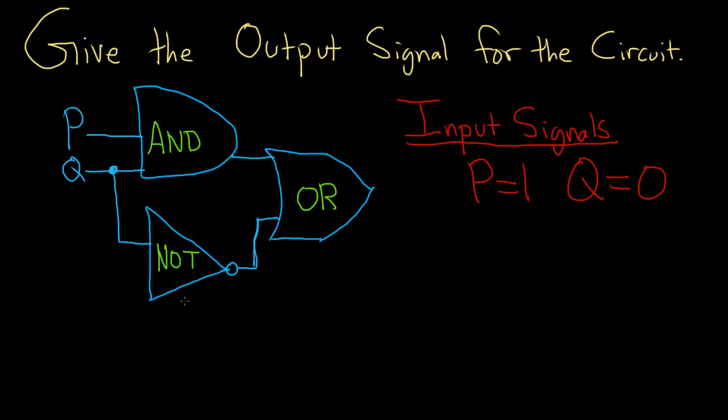Give the output signal for the circuit. So we have here the input signals 1 and 0. So to start off, I like to write them down over here. So we have P is 1 and Q is 0.